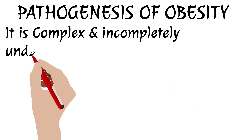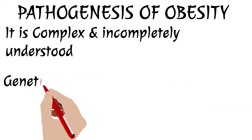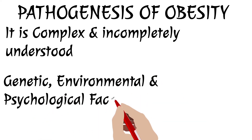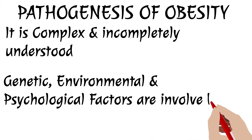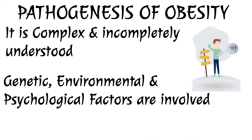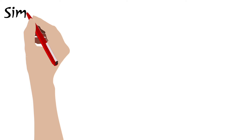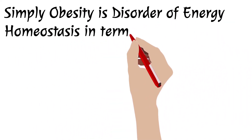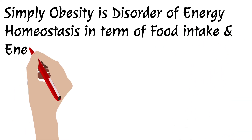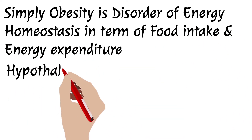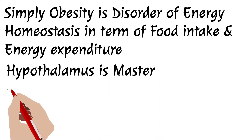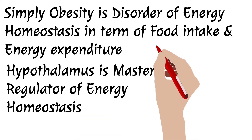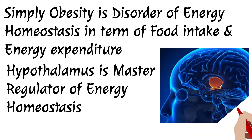The pathogenesis of obesity is very complex and incompletely understood. Genetic, environmental, and psychological factors all play a role. Simply put, obesity is a disorder of energy homeostasis — a balance between food intake and energy expenditure. Whenever this balance is disturbed, obesity will occur. The hypothalamus is the master regulator of energy homeostasis.